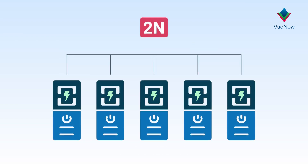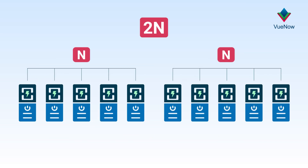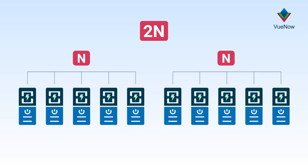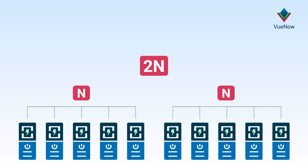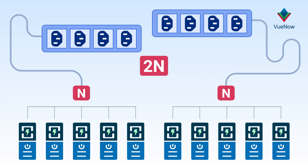2N mirrors the original setup. So if a datacenter had 5 UPS units, 2N redundancy would be 5 more UPS for a total of 10 UPS. This would also have 2 separate distribution systems, so in an unfortunate event it could switch over without a problem.